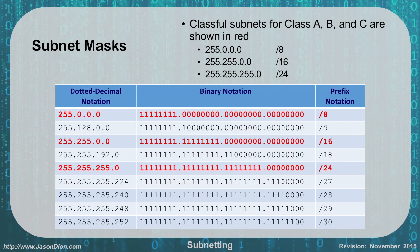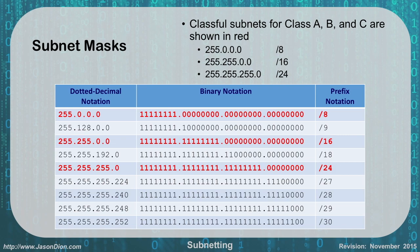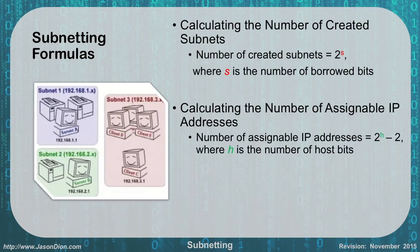Conversely, for a slash 30 starting from a class C, we have the first 24 bits and borrowed six more. 2 to the 6th gives us 64 subnets. Each subnet has 2 to the H with two host bits remaining, so 2 to the 2nd is 4, minus 2 gives us two assignable IPs. Slash 30s are commonly used for router-to-router communication — a subnetwork with one network address, two usable host IPs, and one broadcast. The first and last IP of any subnet are always reserved: the first is the network name, the last is the broadcast.